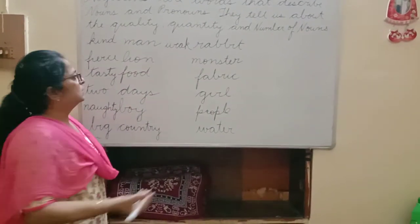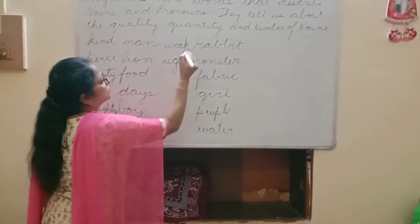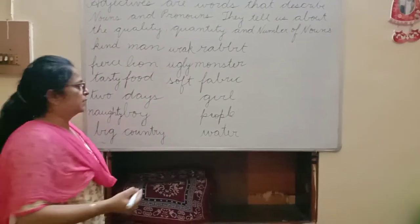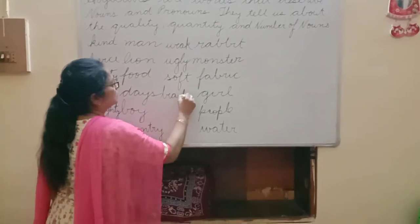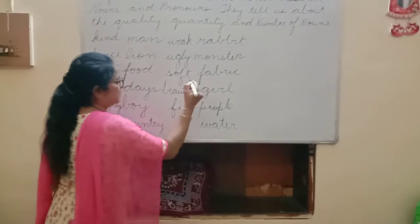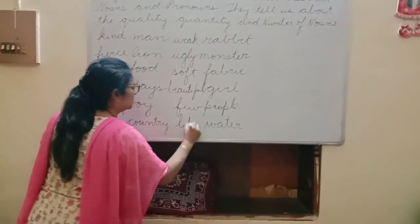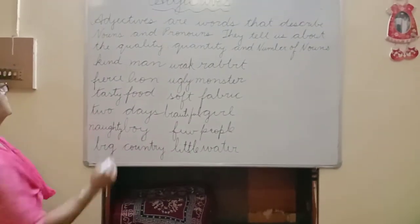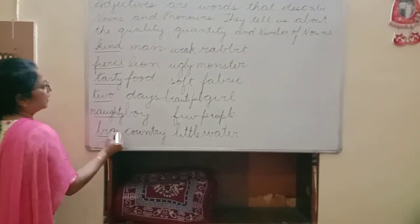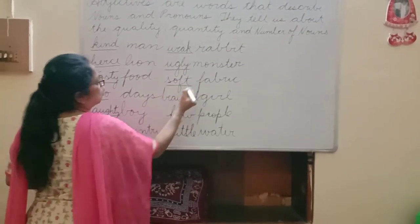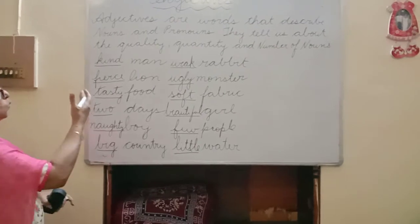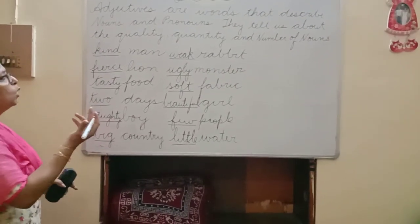The next one is 'monster' — it can be 'ugly monster'. 'Fabric' — it can be 'soft fabric'. Then we have 'girl' — it can be 'beautiful girl'. We have 'people': many people, some people, few people. And 'water': little water. So all these words — kind, fierce, tasty, two, naughty, big, weak, ugly, soft, beautiful, few, and little — all describe the noun. So these words that describe nouns are called adjectives.